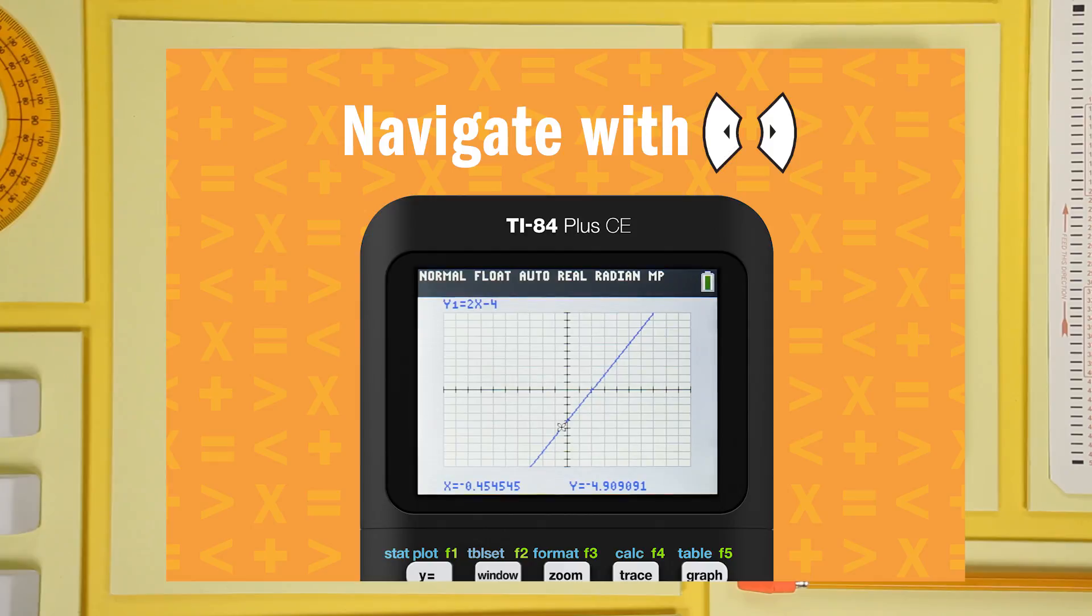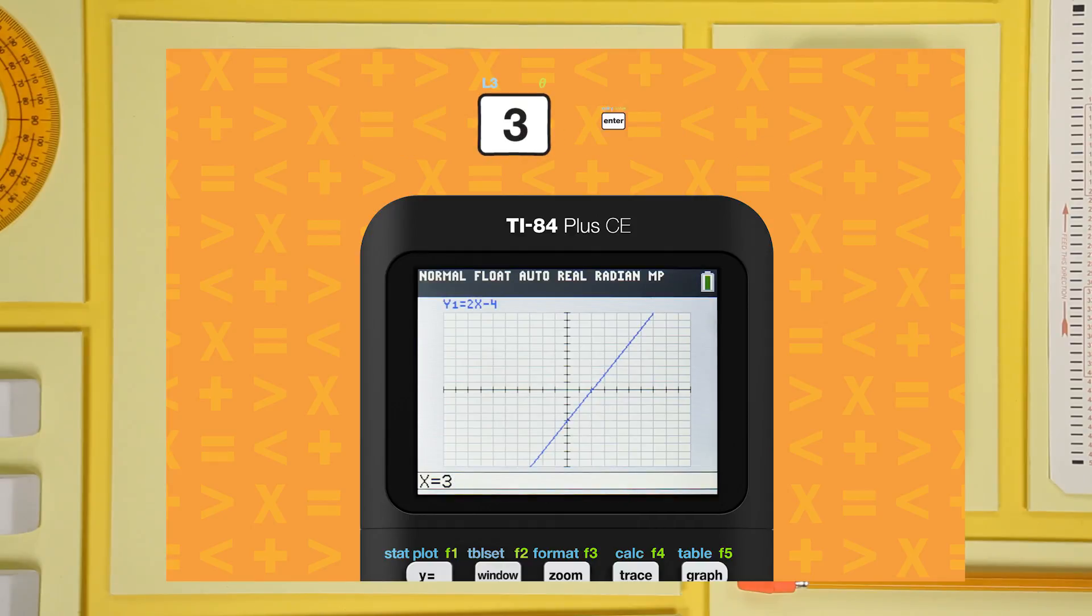but if you're looking for a specific value, say what is y when x is 3, just type in 3 and press enter. The cursor will jump to that point.